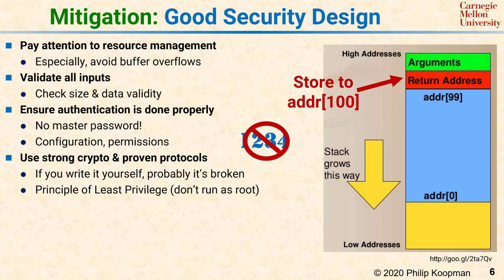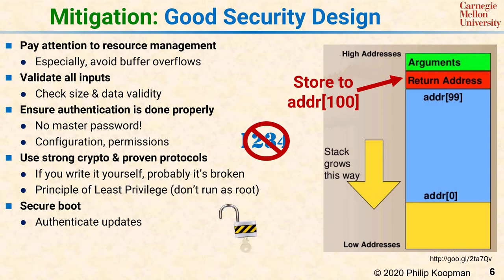Be sure your system uses a secure bootloader that checks software integrity to ensure a malicious update has not been inserted, and authenticate updates using a cryptographic technique such as secure digital signatures. At a high level, the most important security principle is to avoid security via obscurity — a security argument based on the attacker not knowing what you did is a bad security argument.